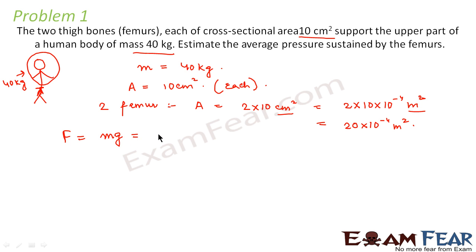What is m? m is 40 and g is, let us say, 9.8 meter per second or let us consider it as 10 meter per second. So it is 400. So this is the force.